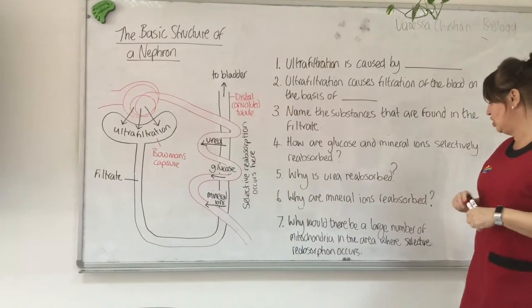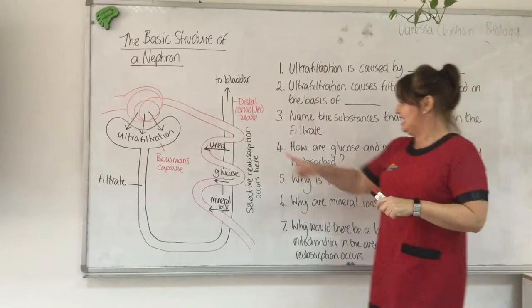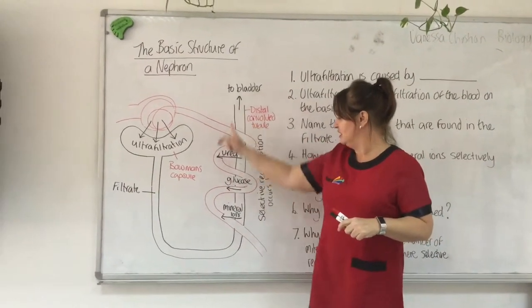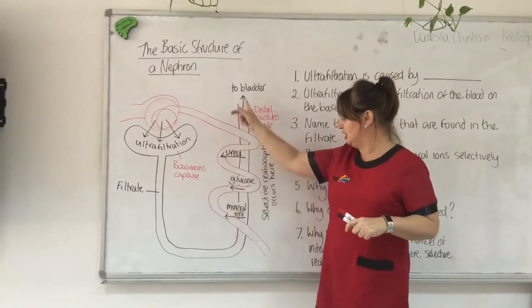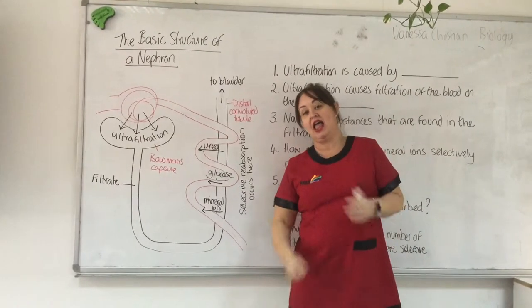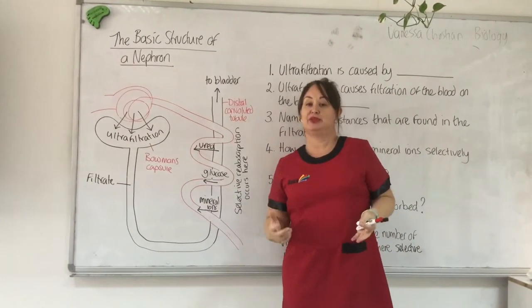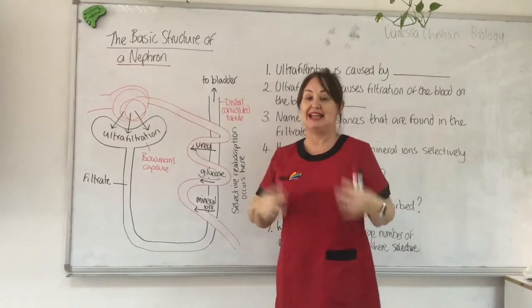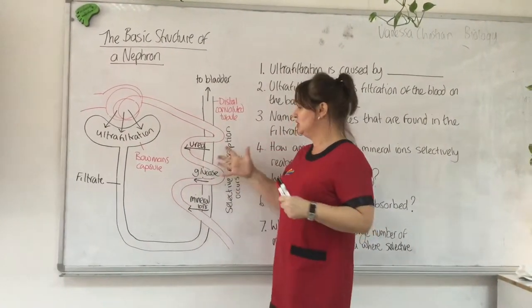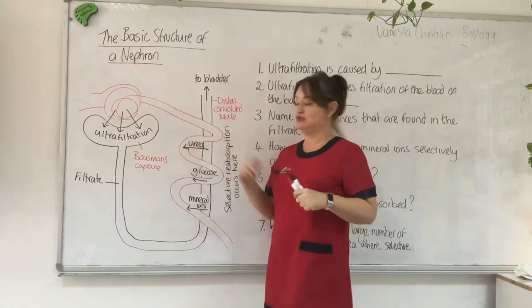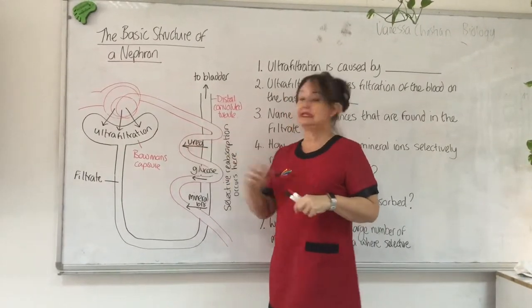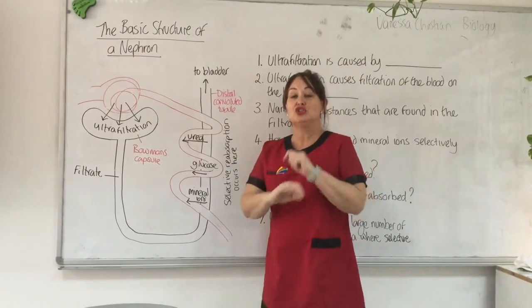Why would there be a large number of mitochondria in the selective reabsorption area? Because that's where ATP is produced, and ATP fuels active transport, which is what is reabsorbing the substances back into the blood.